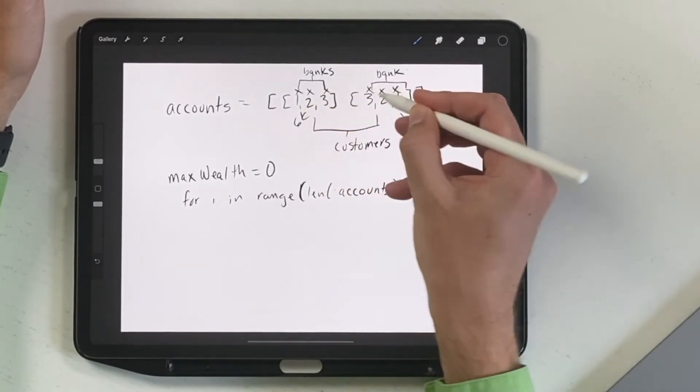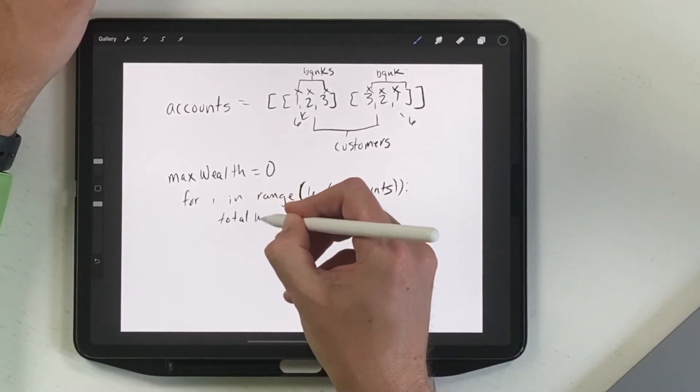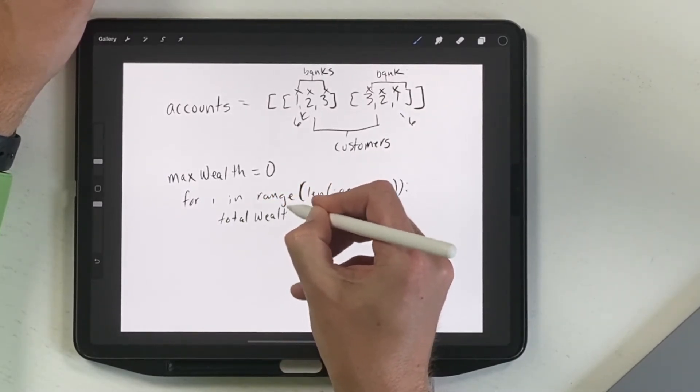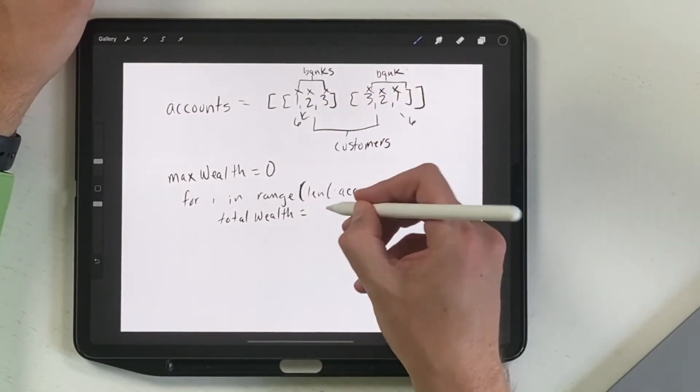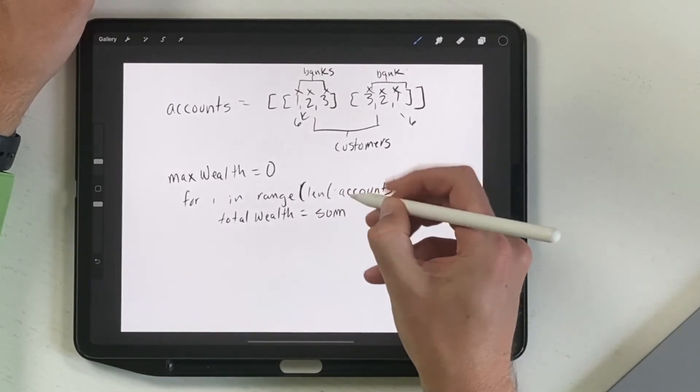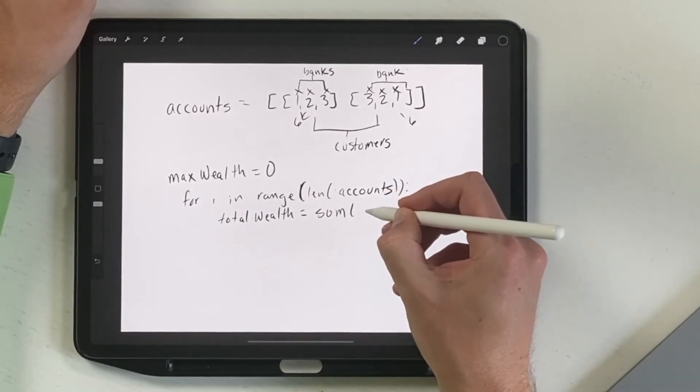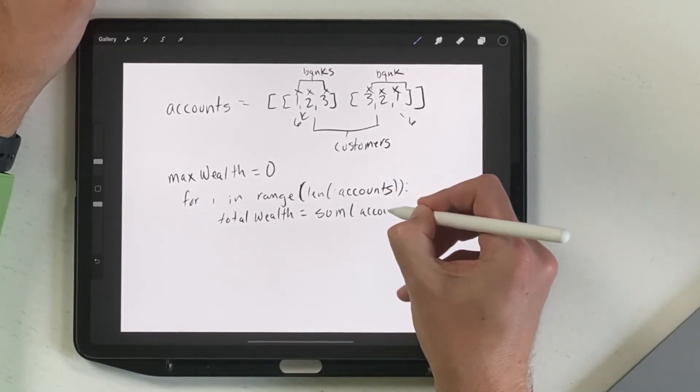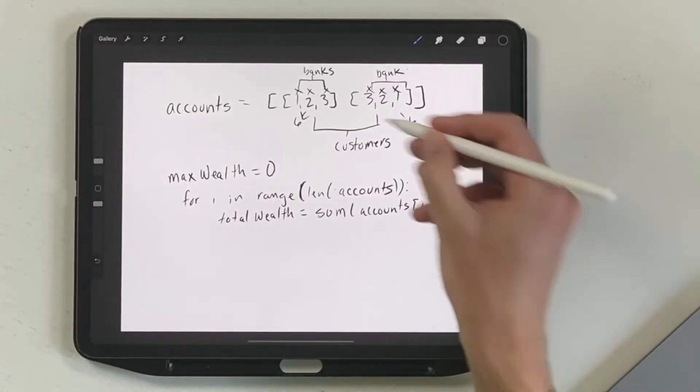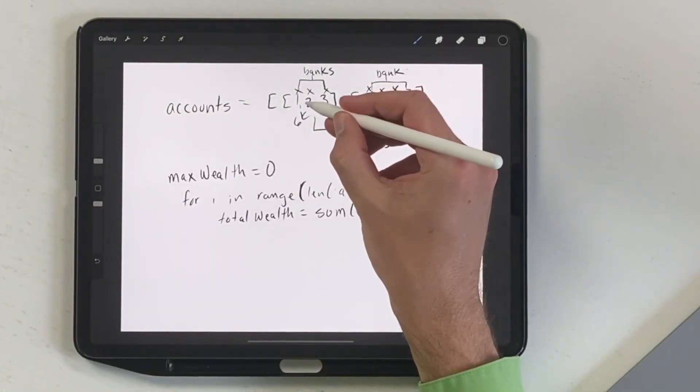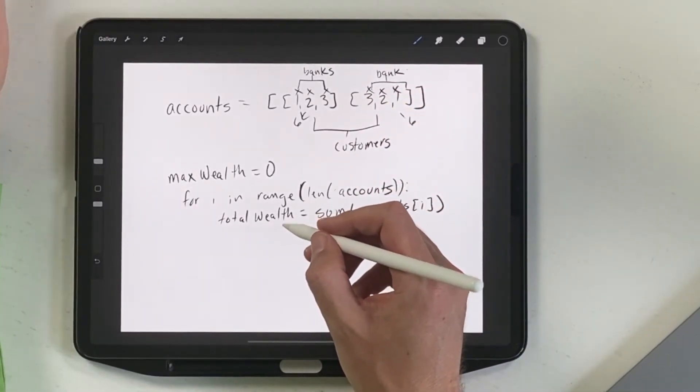And what this is going to do is it's going to loop through this one, the full length, and then it's going to loop through this one, the full length on the next iteration by doing the length of accounts. So what we're going to do after that is we're going to find the total wealth in this first set of numbers, and then we'll loop through and find the total wealth in the second set of numbers. So what we'll do is we'll have a new variable called total wealth. And what that is going to equal is the sum of this. So we'll do sum and we will take the accounts at position I. So that's going to add this up three plus two plus one is six, and it's going to get, it's going to enter six in the total wealth variable.